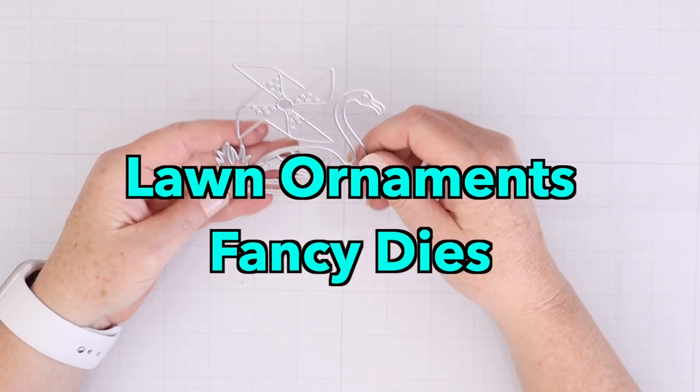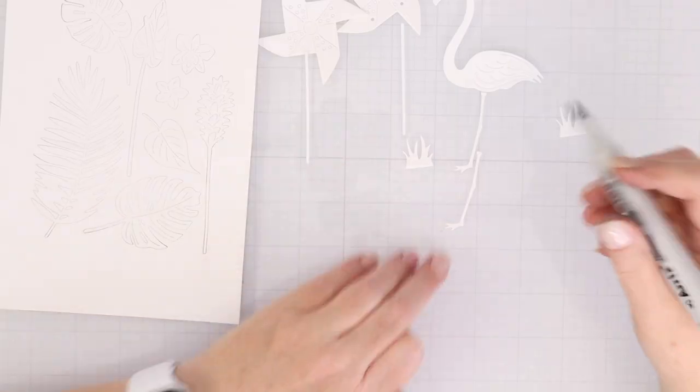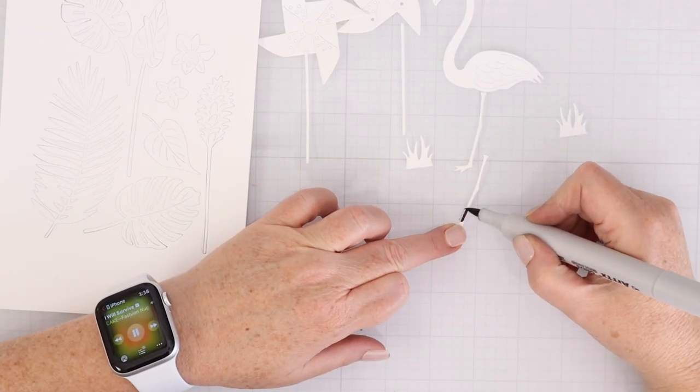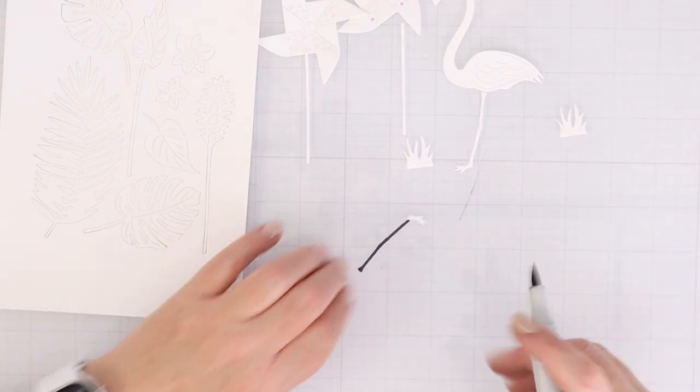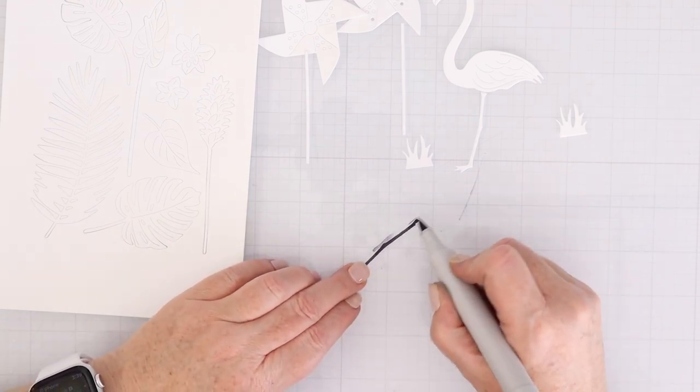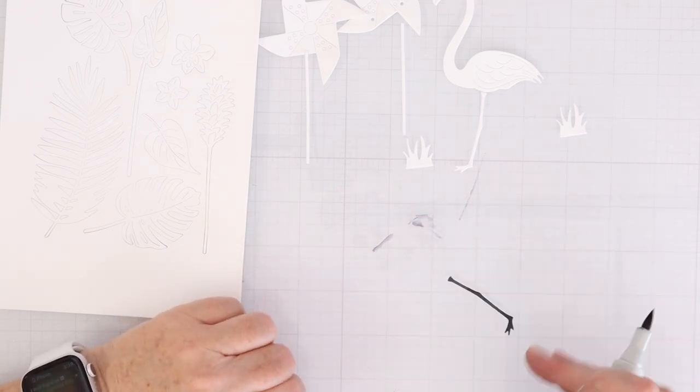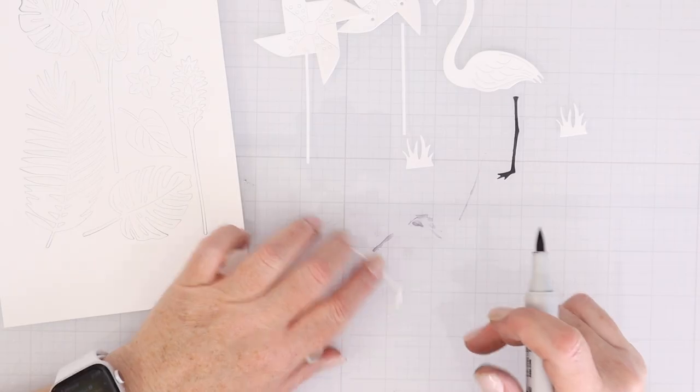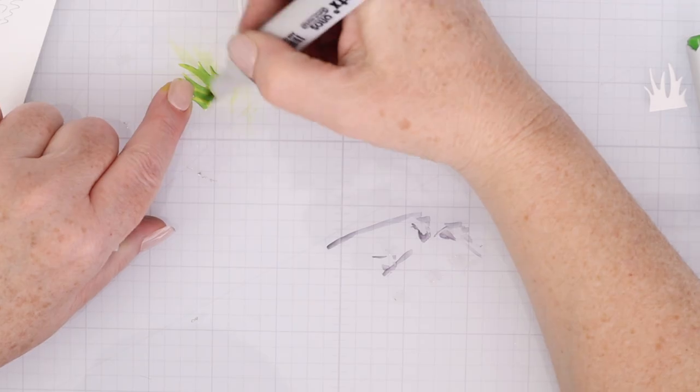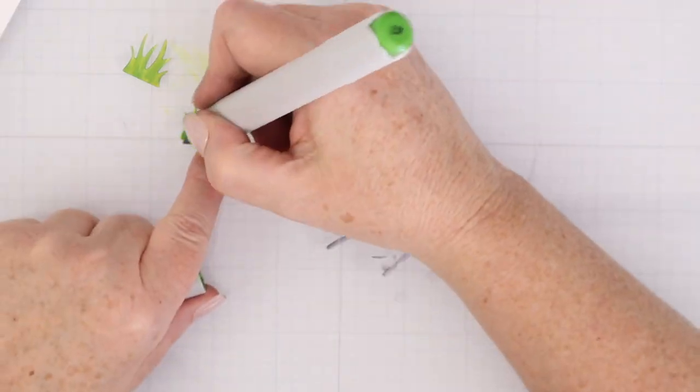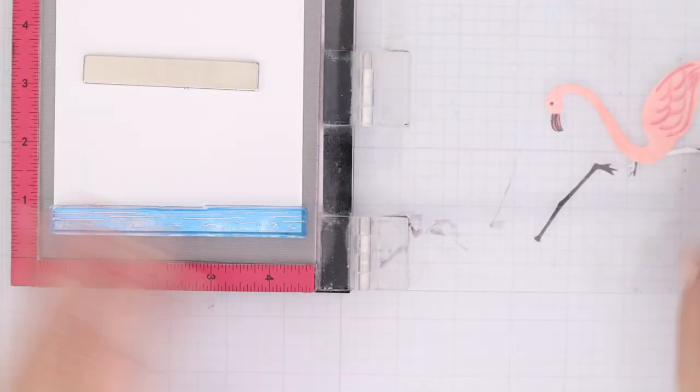These are the Lawn Ornaments Fancy Dies. You can see you get a pinwheel, you get a flamingo, the flamingo leg, and the pinwheel sticks, as well as some grass. I decided to just work with the flamingo again because I'm really loving the flamingos in this set. So I cut out two of the legs. I think it's probably just supposed to be on the one, but I cut out two, and I'm coloring them in with Artix markers. They're really juicy. They make it really easy to color in. And even though I am not using my super friendly alcohol marker cardstock, I'm just using my regular Neenah Solar White, I had no problems coloring those in and blending them out.